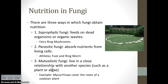There are three ways that fungi obtain nutrition. Saprophytic fungi are your typical decomposers — they feed on dead organisms or organic waste, like fairy ring mushrooms feeding on decaying grass. Parasitic fungi, like athlete's foot and ringworm, absorb nutrients from cells that are still alive — they literally break down living cells on your skin. Then there are mutualistic fungi that live in symbiotic mutualistic relationships with other species, such as mycorrhizae.